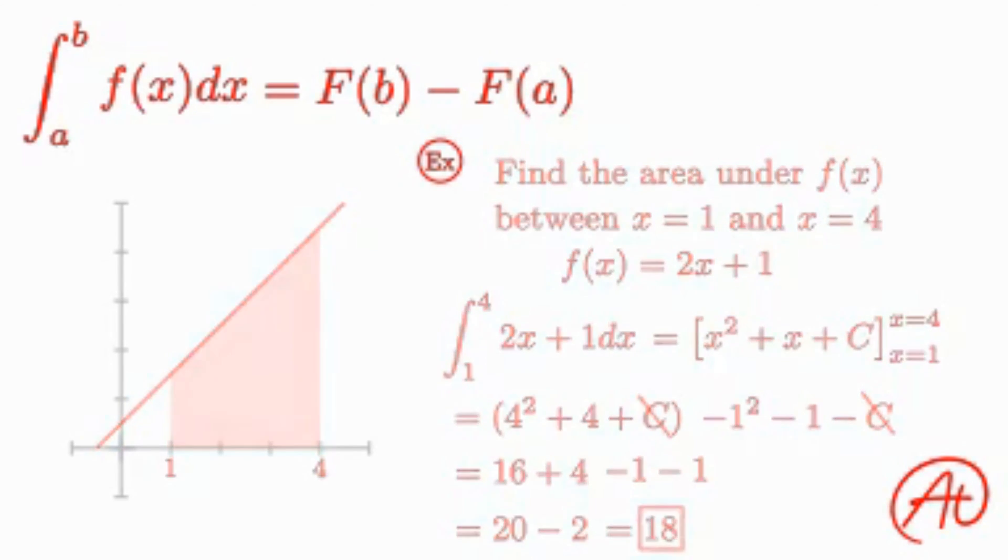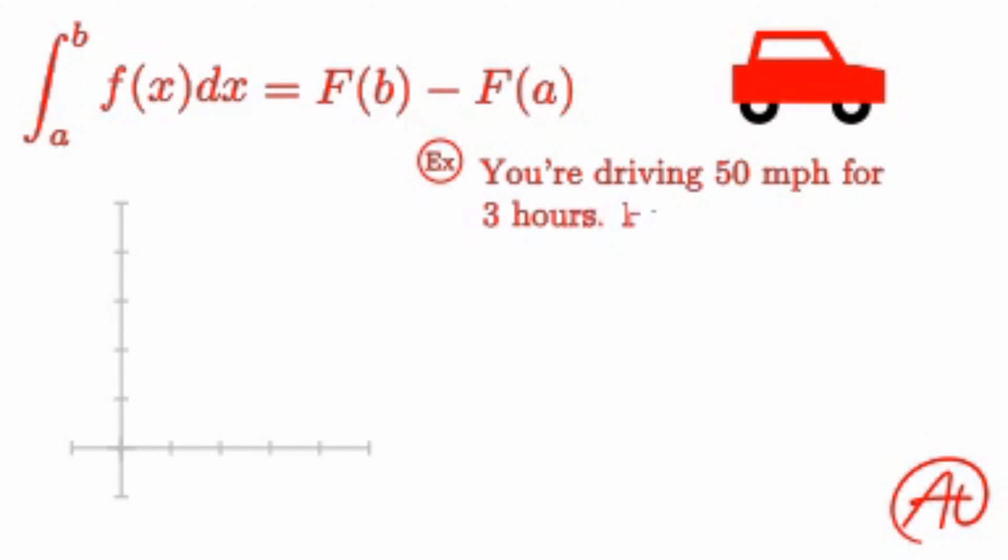Now that we covered that problem, let's return to our question from the beginning. Let's say you were driving your car at 50 miles per hour for 3 hours. How far did you end up driving? In other words, we want to know what your change in position was from the time you started at hour 0 to the time you stopped at hour 3.